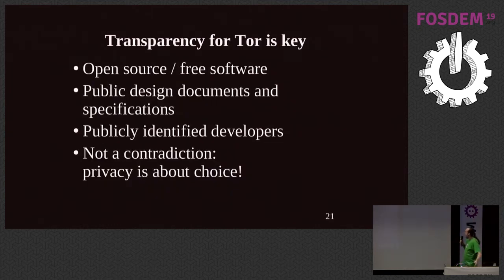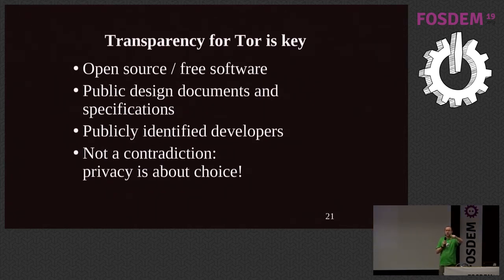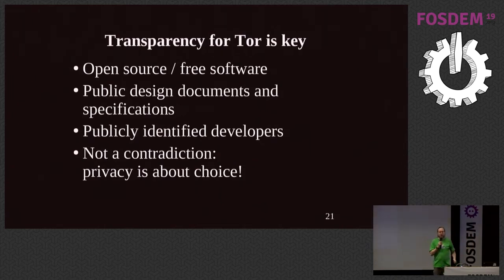Another key thing is the transparency side. We're free software, open source. We give you specifications describing what we built, source code, design documents and proposals explaining why we built it this way. We need all three layers. But it's more than that — we also show up to conferences, explain things, and answer questions about TOR. This level of transparency is critical for community building and trust in the software.